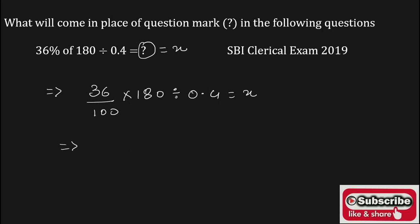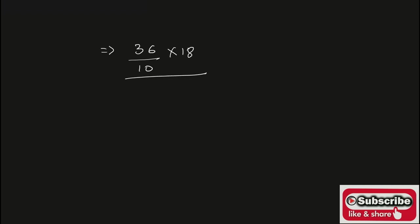Now cancel the terms — 0 and 0 got cancelled. Again, 36 upon 10 into 18, divided by 0.4 can be written as 4 divided by 10, is equal to x. Now dividing these two terms, that is 36 upon 10 into 18, whole divided by 4 upon 10, is equal to x.